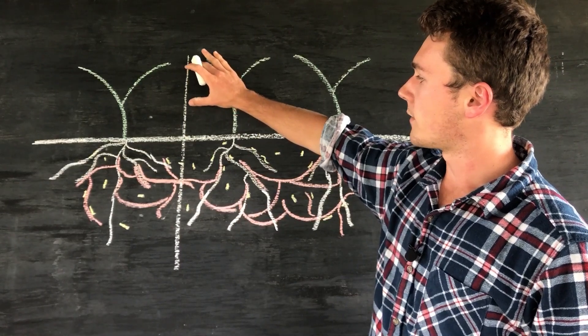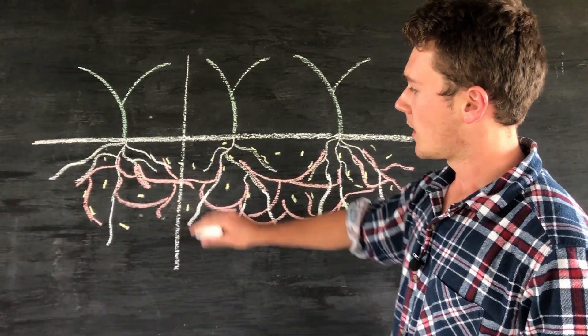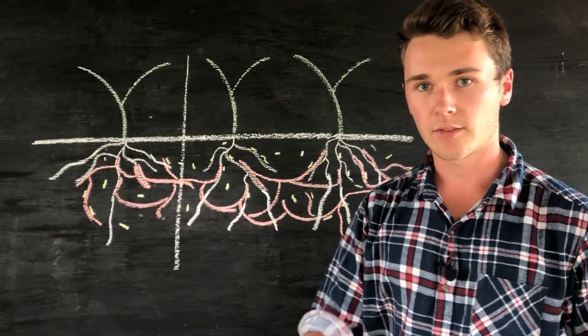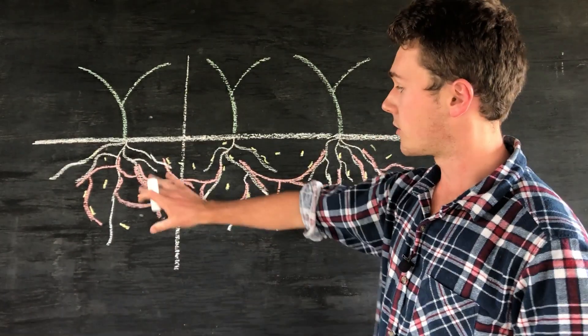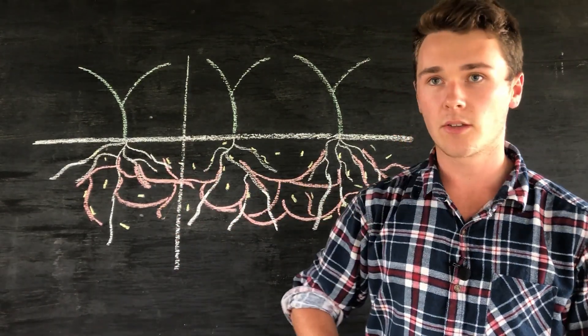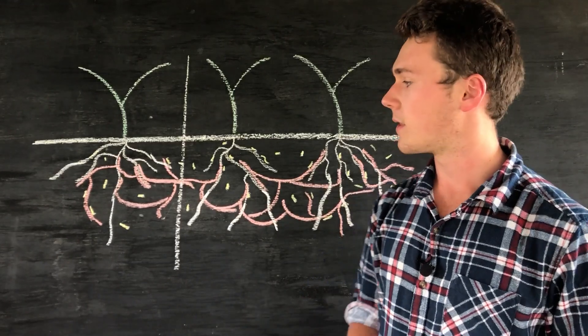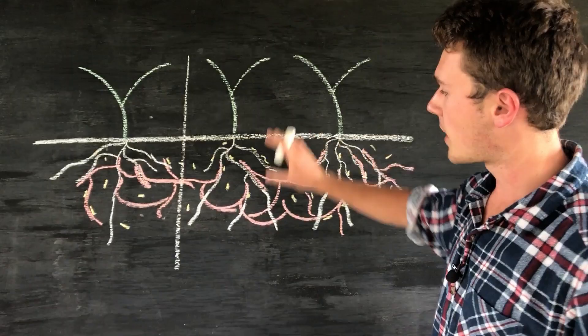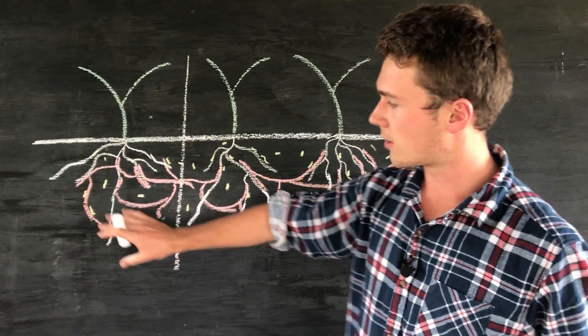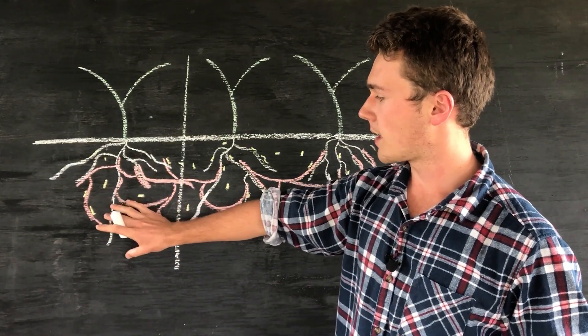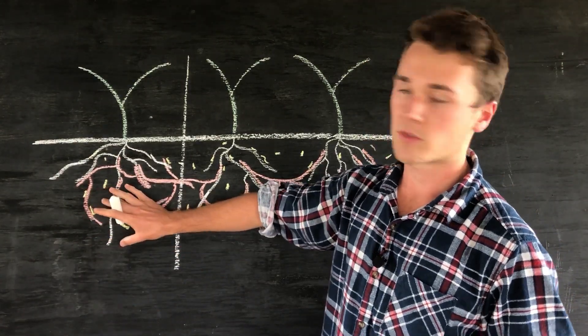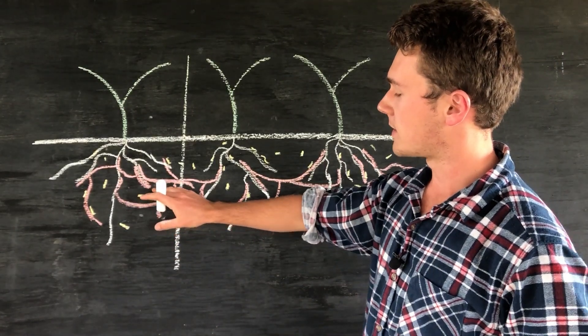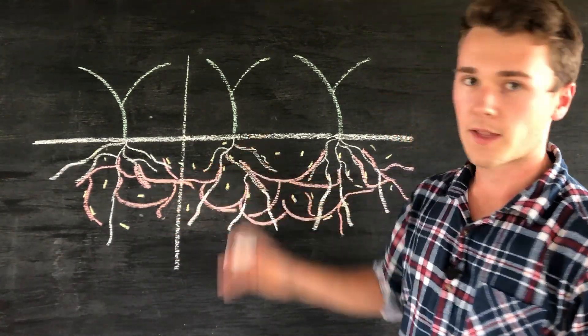But if we cut this up, the mycorrhizal fungi is going to have to work a bit harder to regrow across, so it's going to stunt the production of this highway. Let's say this plant here needs nitrogen but there's not much around here but there's lots over here. The mycorrhizal fungi won't be able to transport the nitrogen from this side to the plant.